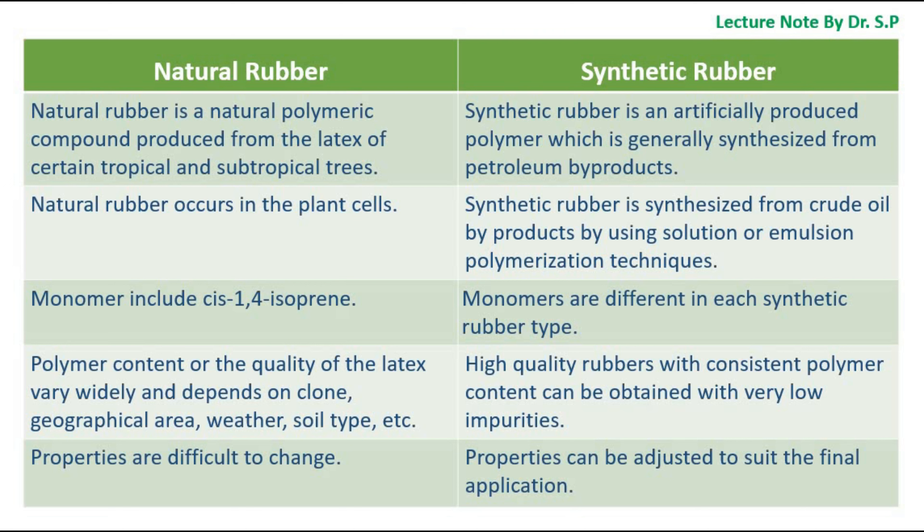Natural rubber is a natural polymeric compound produced from the latex of certain tropical and subtropical trees. Synthetic rubber is an artificially produced polymer which is generally synthesized from petroleum byproducts.